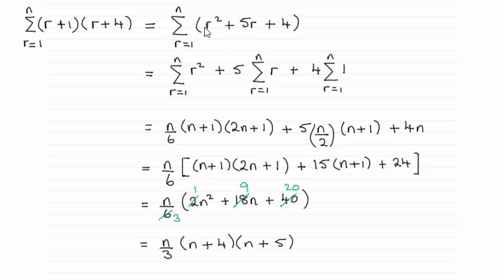Then we can take individual sums of each one of those terms. So for the first one we've got the sum of r squared. Here when you've got a constant times r you can bring the constant out of the summation. You should be familiar with that particular result.